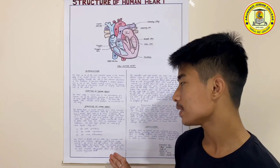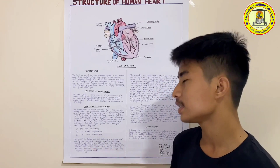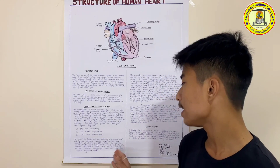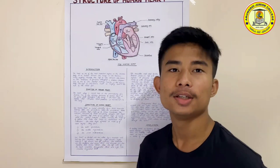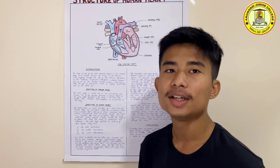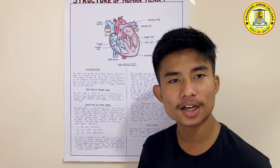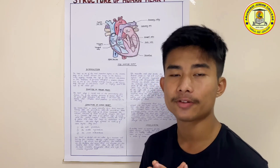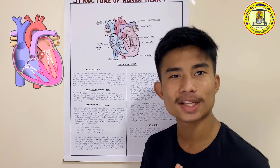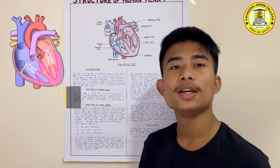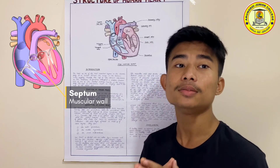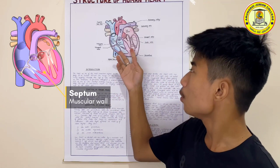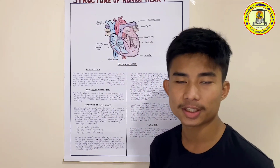The left side of the heart circulates oxygenated blood and the right side circulates deoxygenated blood. The muscular wall that divides the heart into the left and right sides is known as the septum. It prevents oxygenated blood from mixing with deoxygenated blood.